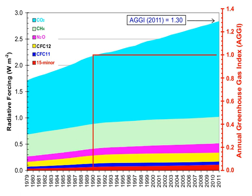A 2014 analysis states that although methane's initial impact is about 100 times greater than that of CO2, because of the shorter atmospheric lifetime, after six or seven decades the impact of the two gases is about equal, and from then on methane's relative role continues to decline. The decrease in GWP at longer times is because methane is degraded to water and CO2 through chemical reactions in the atmosphere.